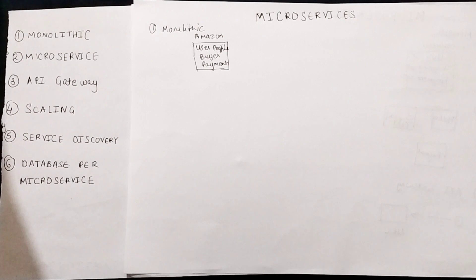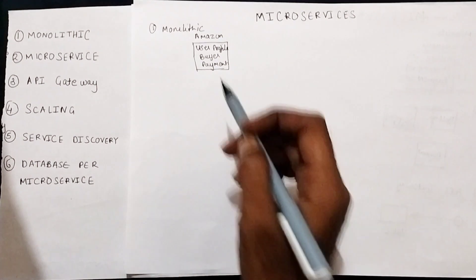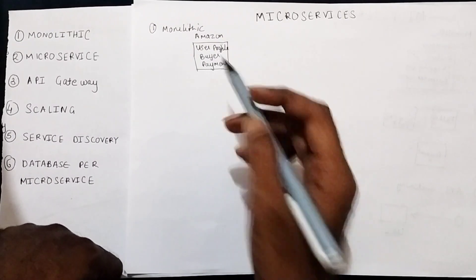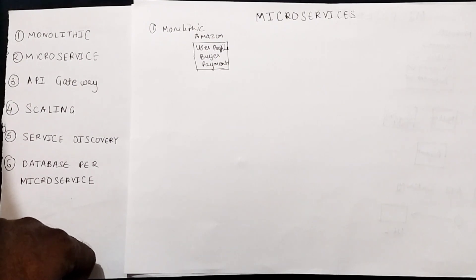Consider an example of an e-commerce website like Amazon. In Amazon there are various features — for example, Amazon manages user information, Amazon manages the buying and selling of products, and Amazon manages payments. So there are various features: user profile, buyer, and payment. All these things are deployed as one application. If you deploy all the features as one deployment, that is known as a monolithic application.